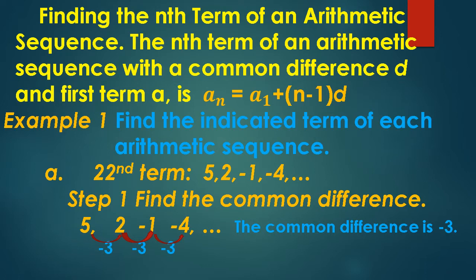Example number 1. Find the indicated term of each arithmetic sequence. Letter A: given the sequence 5, 2, negative 1, negative 4, and so on. Find the common difference. From 5 to 2 the common difference is negative 3. From 2 to negative 1 the common difference is negative 3. From negative 1 to negative 4 the common difference is negative 3. So, the common difference is negative 3.